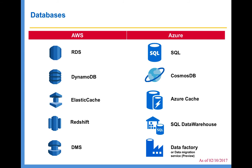In terms of migrating data from your on-premise data center into the cloud, AWS provides a Data Migration Service using which you can migrate the data. In terms of Azure, Azure has Data Factory, which is more like an ETL tool on the cloud — you can use it to migrate data from on-premise to the cloud. Microsoft is also coming up with a dedicated data migration service, currently in preview, which will be released for everybody soon.